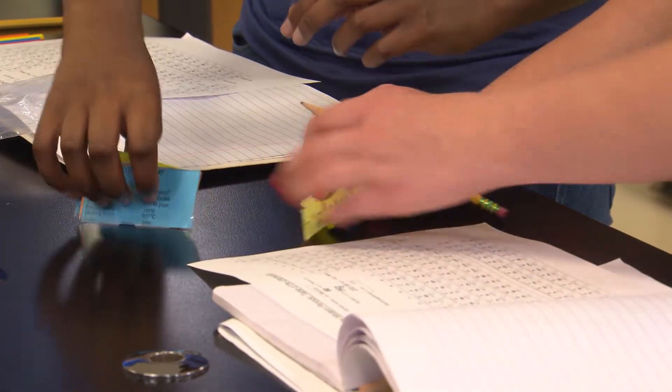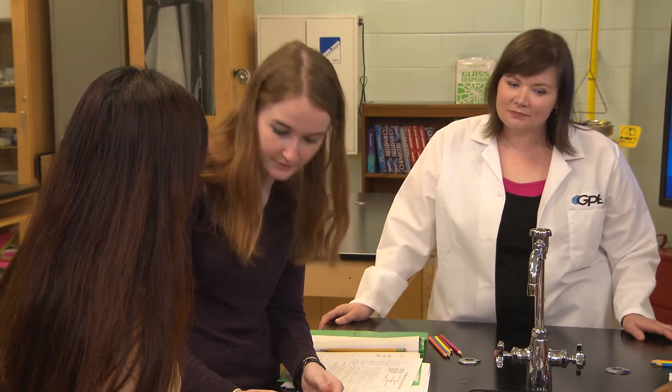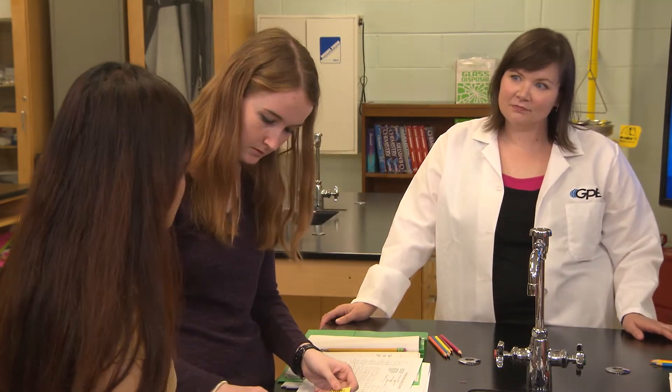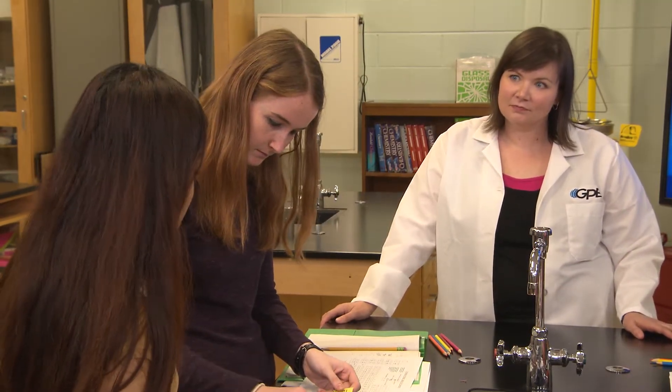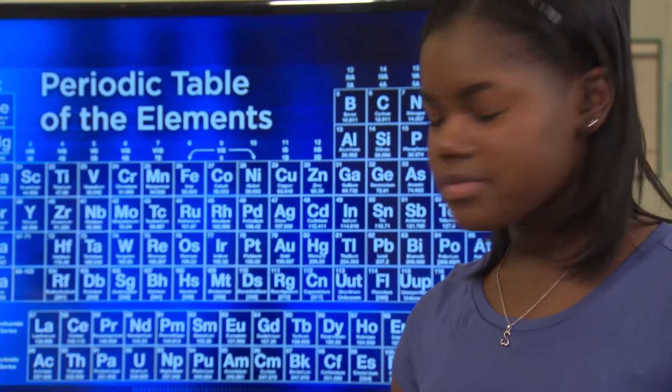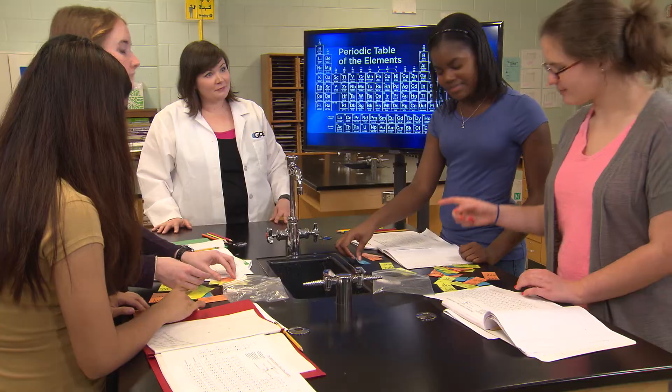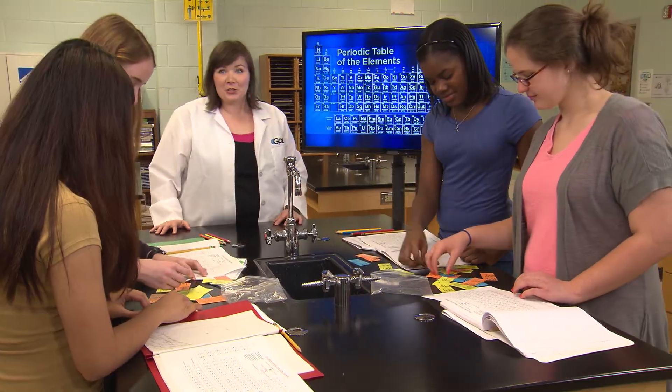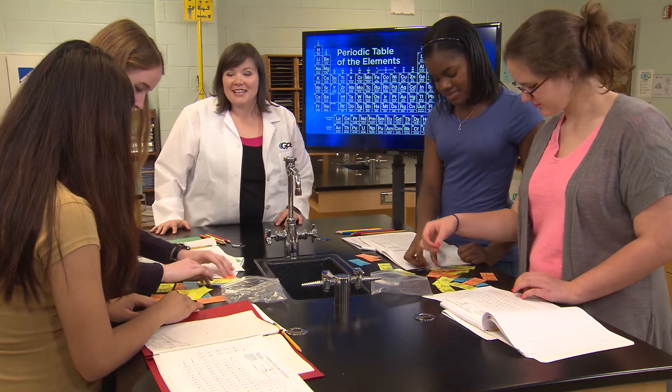Looking at the cards, how can you organize all of this information? We could group them by a property like physical state, but most of them are solids, so physical state won't separate them enough. What if we laid them all out like a periodic table? Let's try that. Sounds like you have a plan.